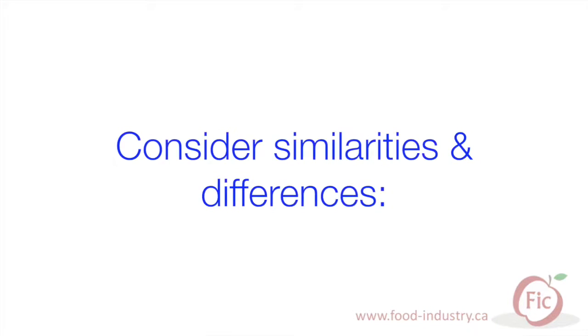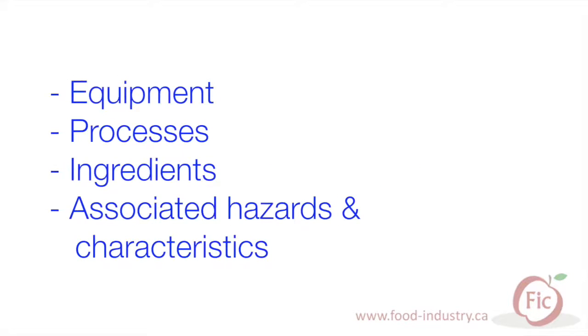Let's take another example where allergens are of concern. Some companies dedicate lines and equipment to run allergenic products, such as products containing peanuts. Therefore, a HACCP plan should be developed to address solely the dedicated line, even if they may be producing different flavors and packaging formats. When grouping products together, try to consider similarities and differences between equipment, processes, ingredients and their associated hazards, as well as food safety characteristics.